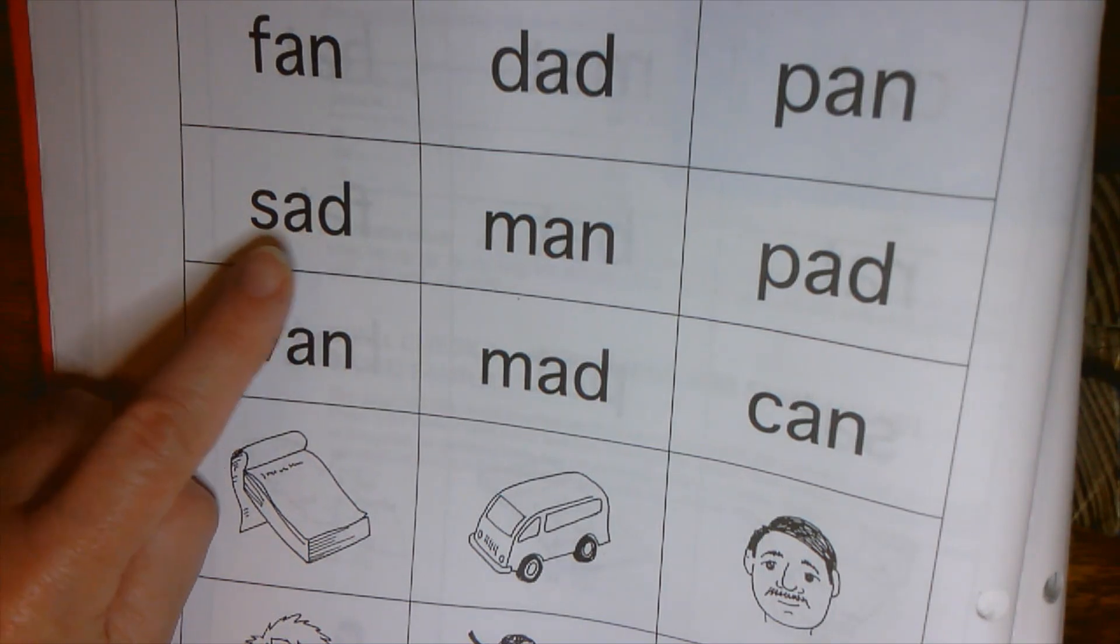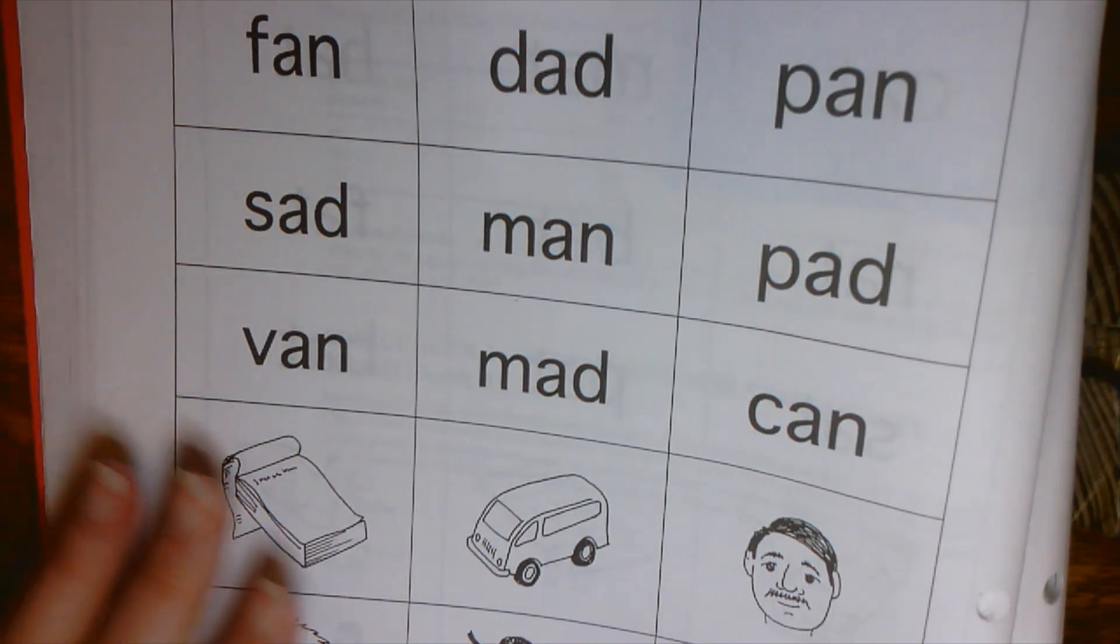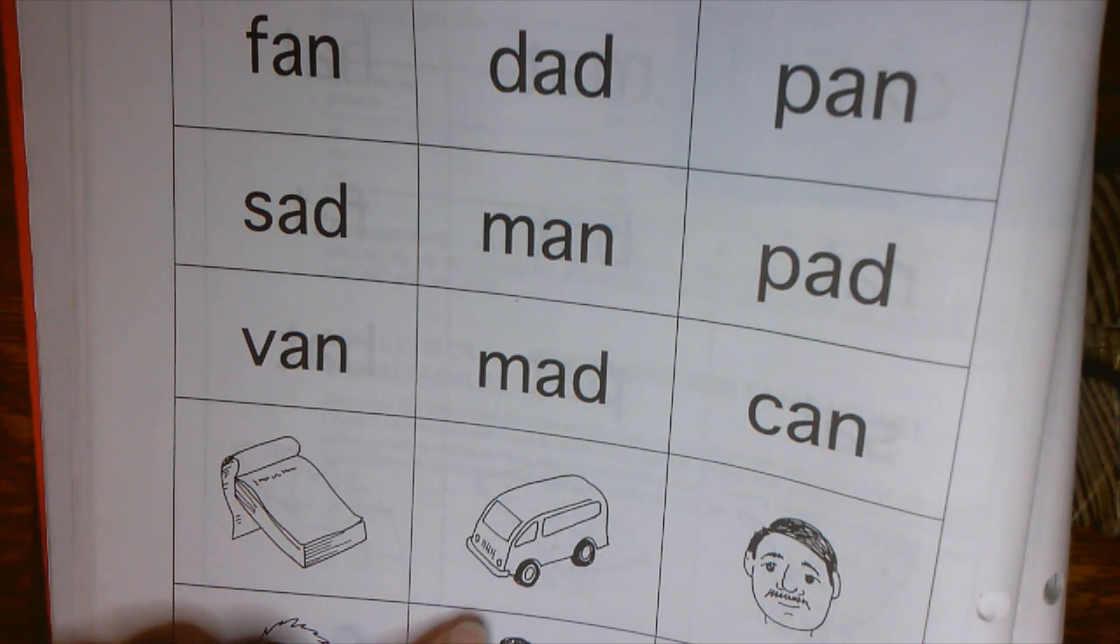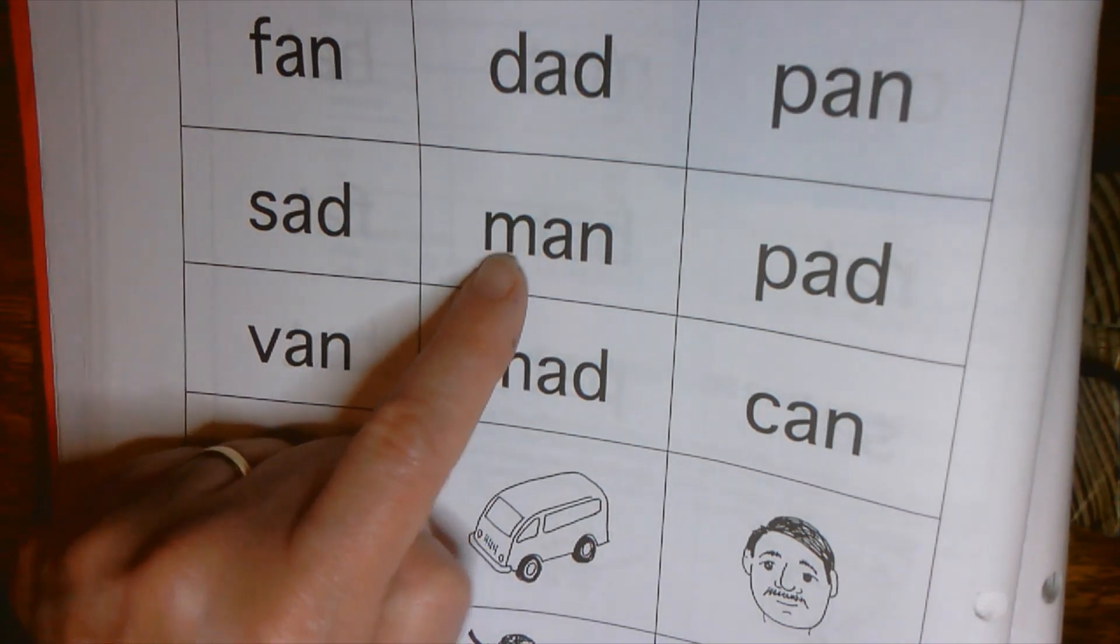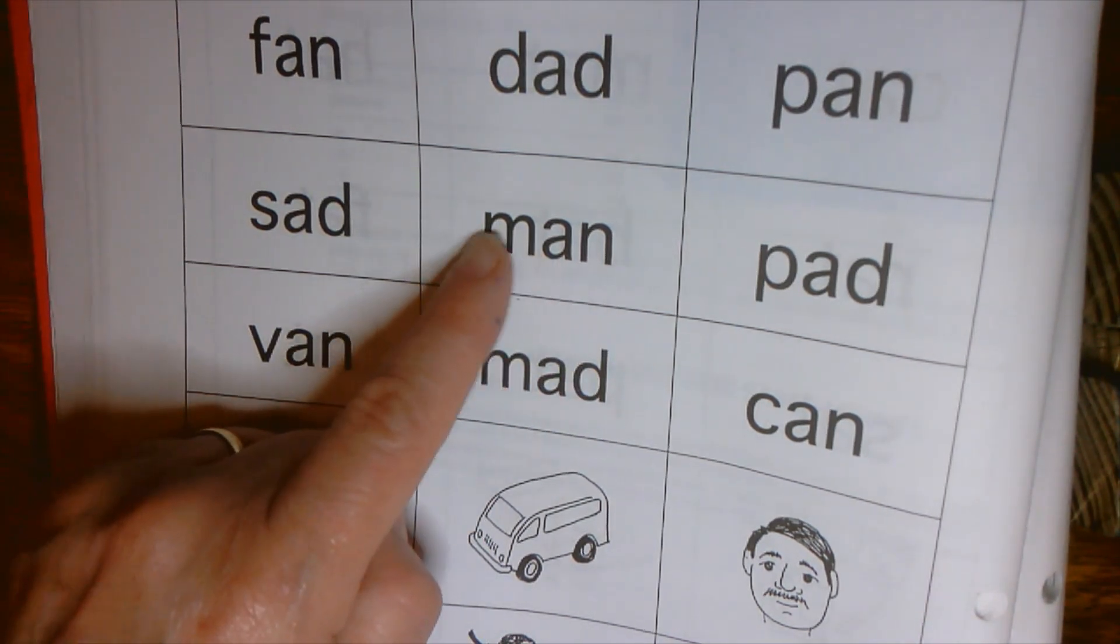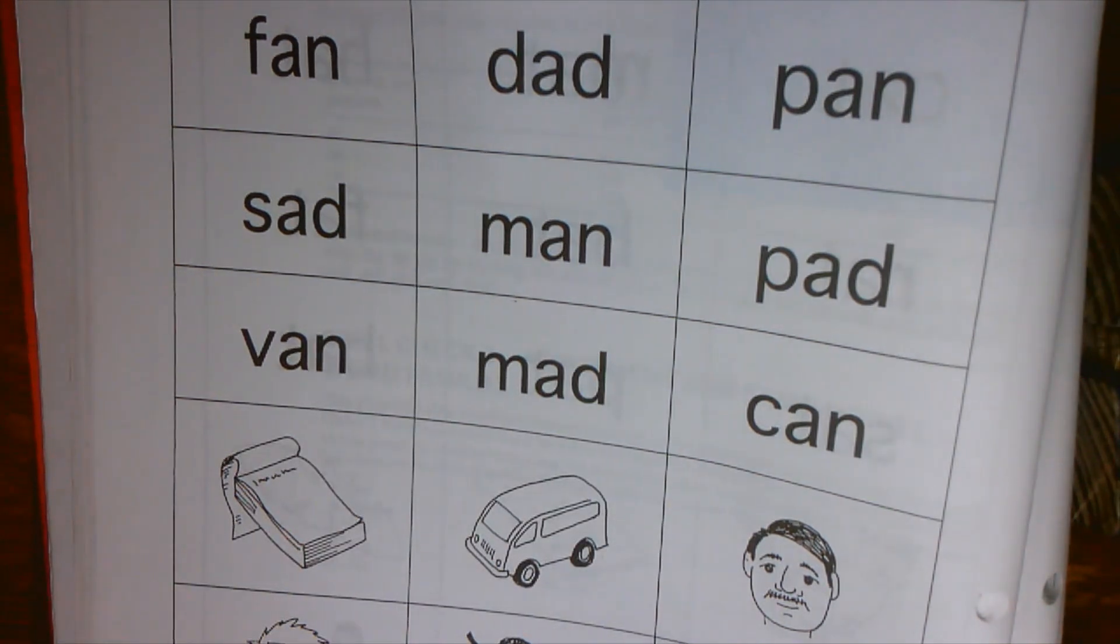S, AD, SAD. You have a picture down here of somebody who looks very sad and crying. M, A, N, MAN. You have a MAN here.